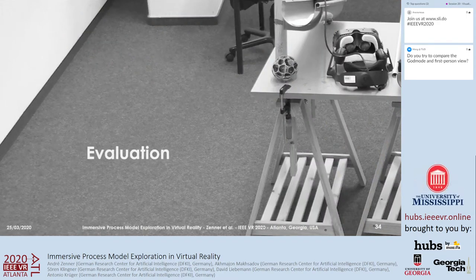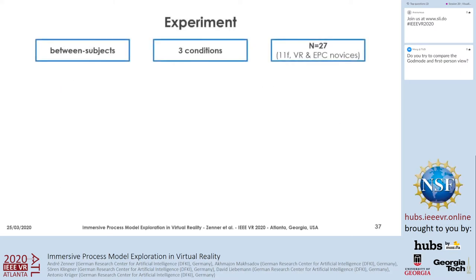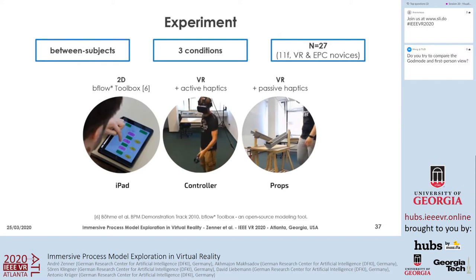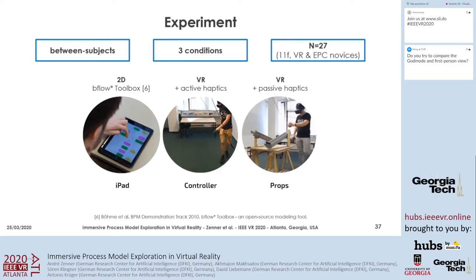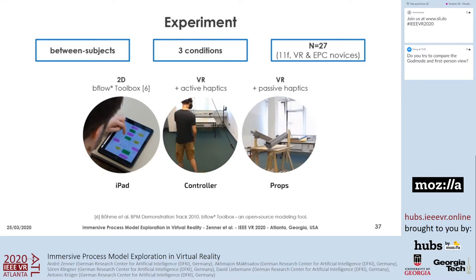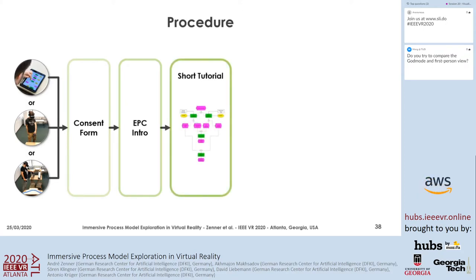We conducted a user study to assess how well our virtual reality interface can convey a process unknown to the user. We took a test process that depicts delivering goods to a store in 53 nodes. Our study was designed as a between-subjects experiment comparing three different conditions with 27 participants. Our baseline condition was the 2D exploration interface implemented on an Apple iPad using the bflow star toolbox. Our experimental conditions were the VR conditions using our immersive exploration interface once with VR controllers and once with passive haptic feedback.